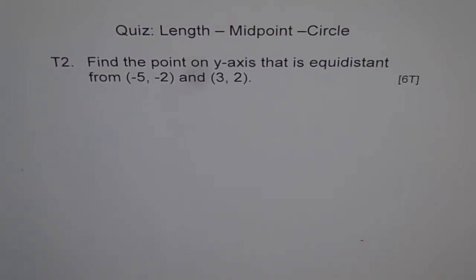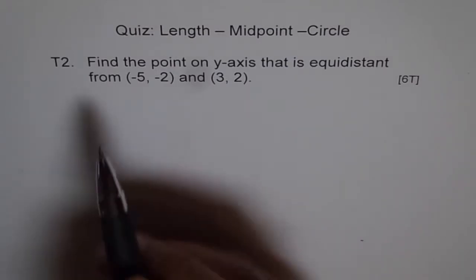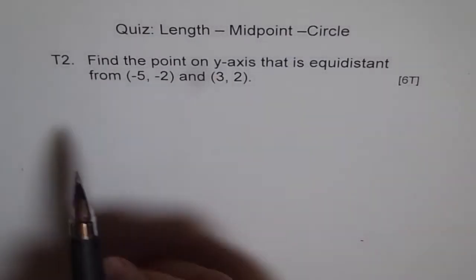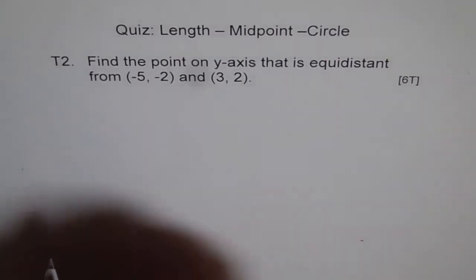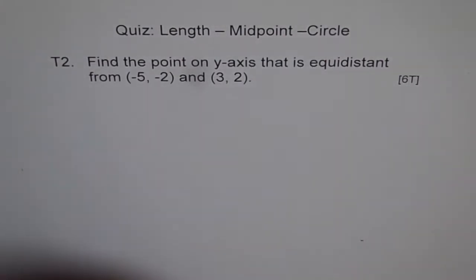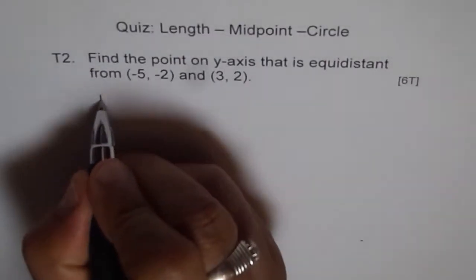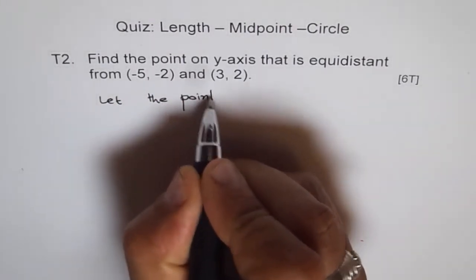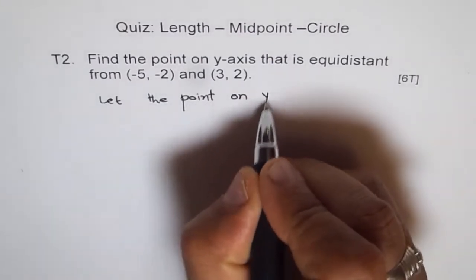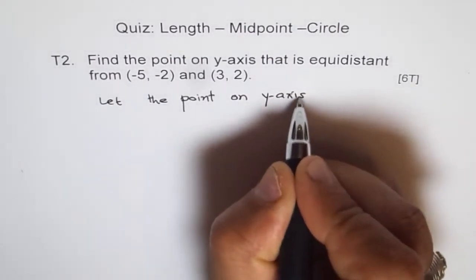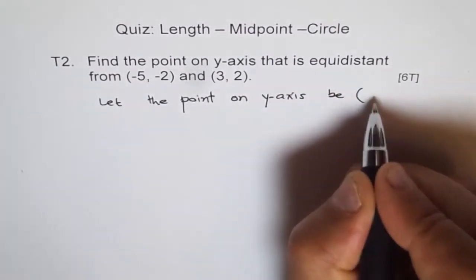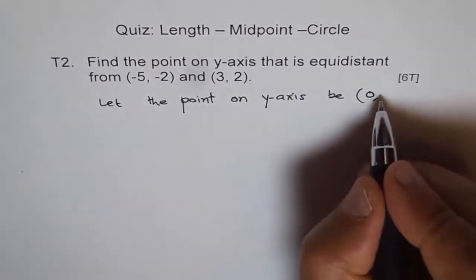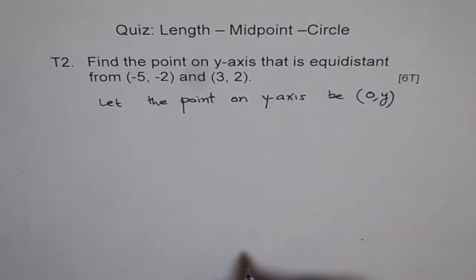The point on y-axis could be what x value? 0 on y-axis, okay. So we say let the point on y-axis be x equals 0 and some y value, let's say (0, y).